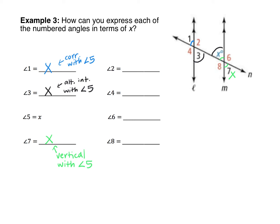Now we have four of the eight angles. To find the remaining pairs, we know that two angles forming a line always equal 180 degrees. If angle 1 is X, then angle 2 is 180 minus X because together angles 1 and 2 form a straight line of 180 degrees. You could also notice that angle 2 and X are same-side interior angles, making them supplementary. Either way, angle 2 equals 180 minus X.